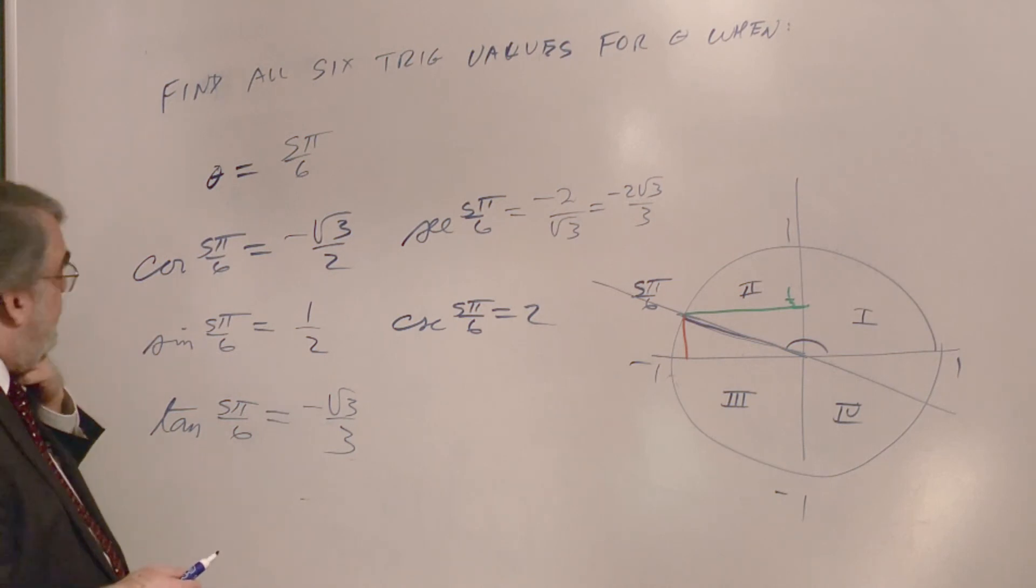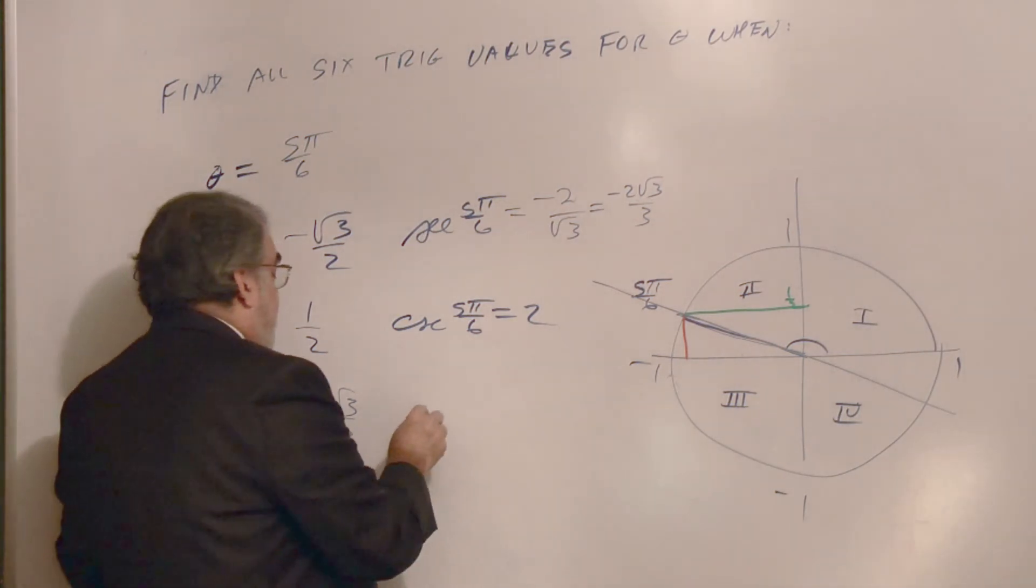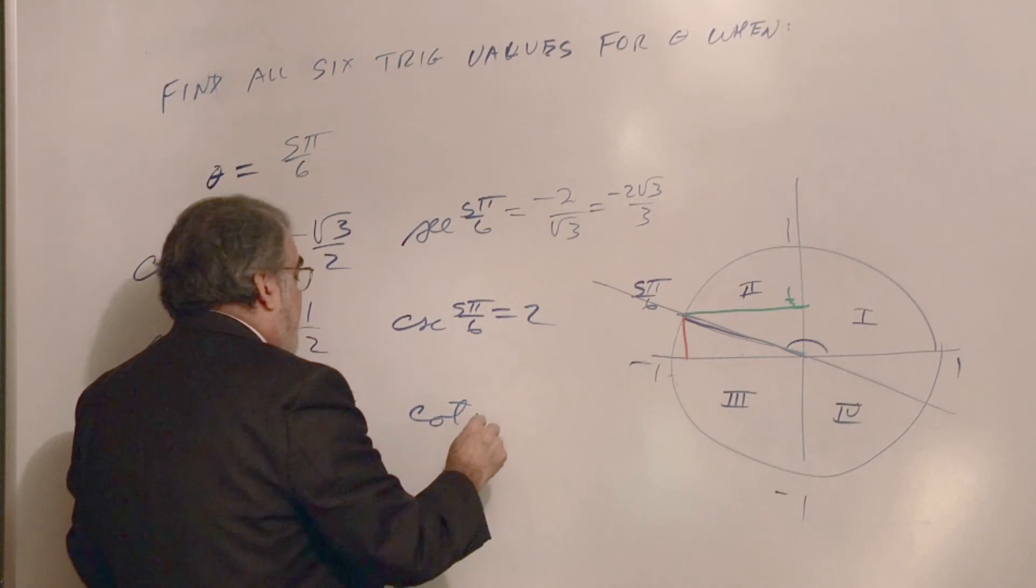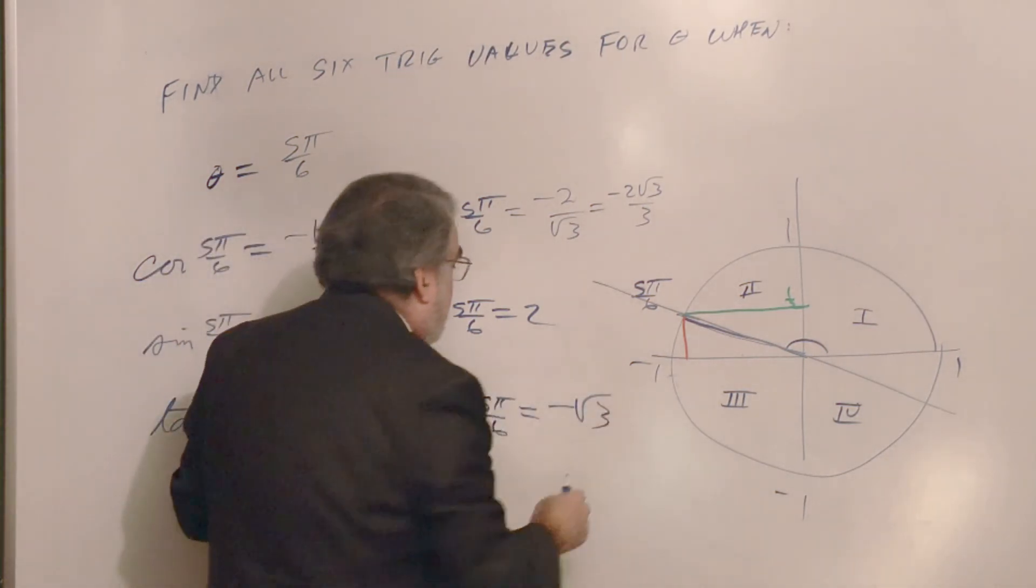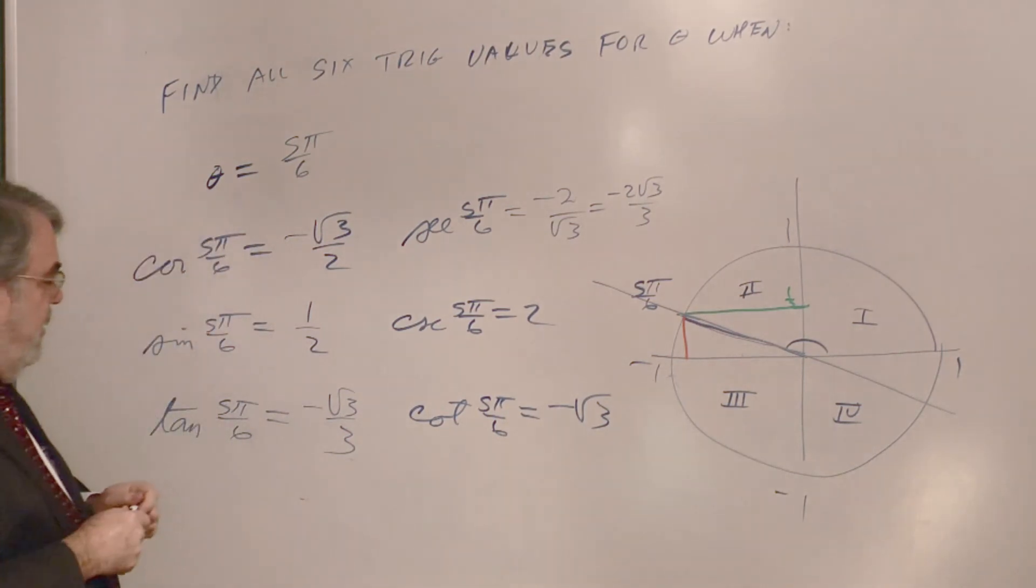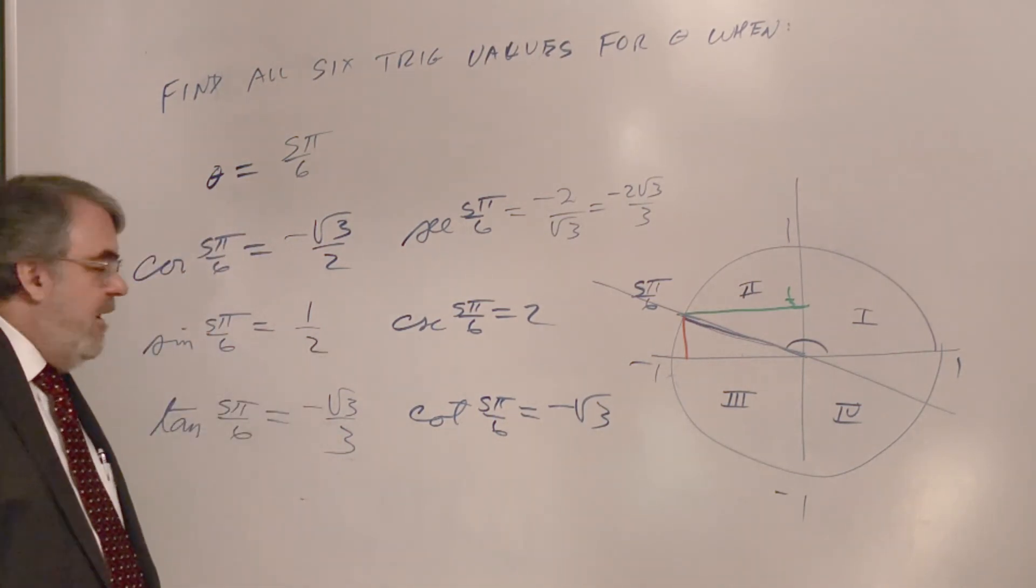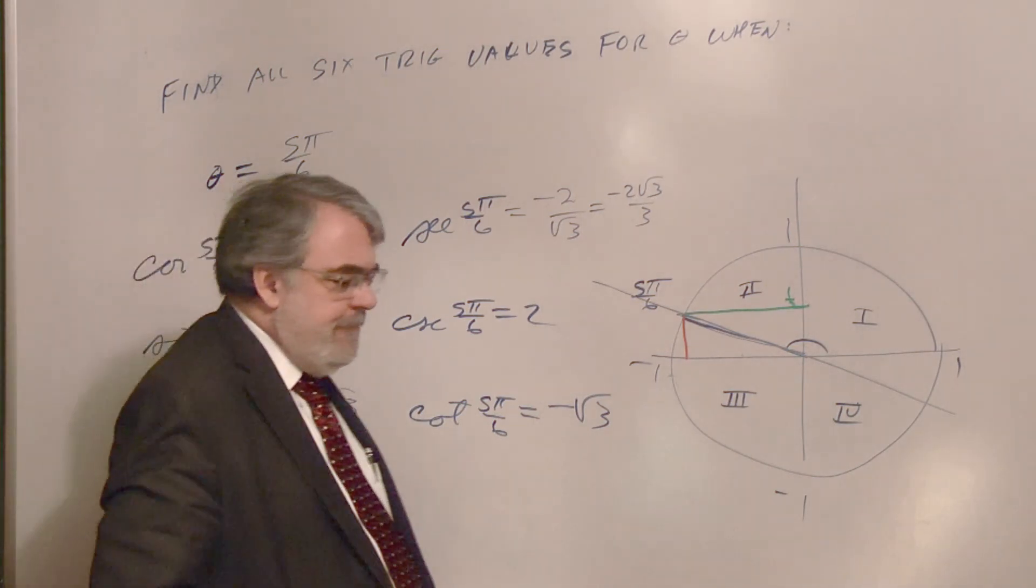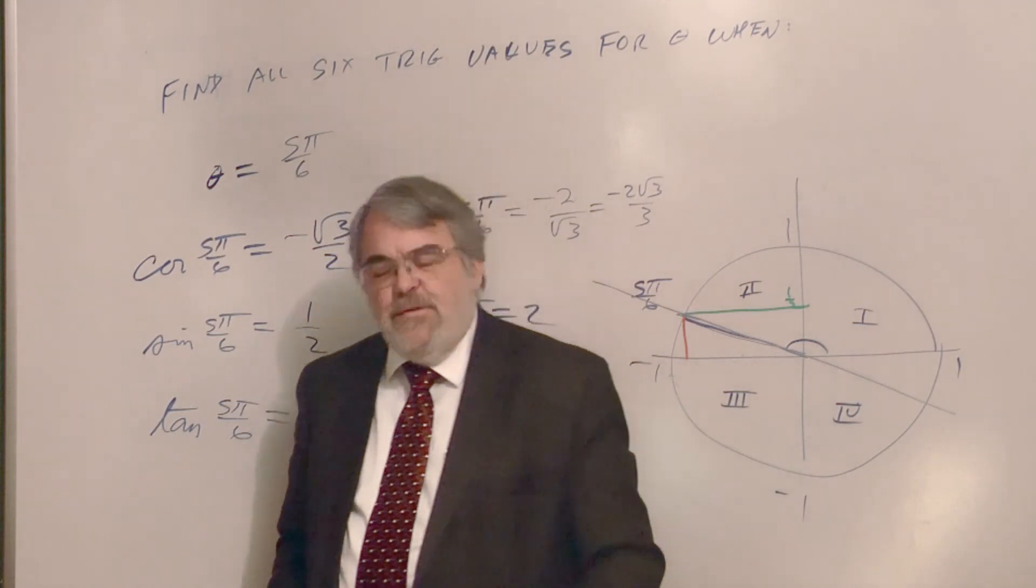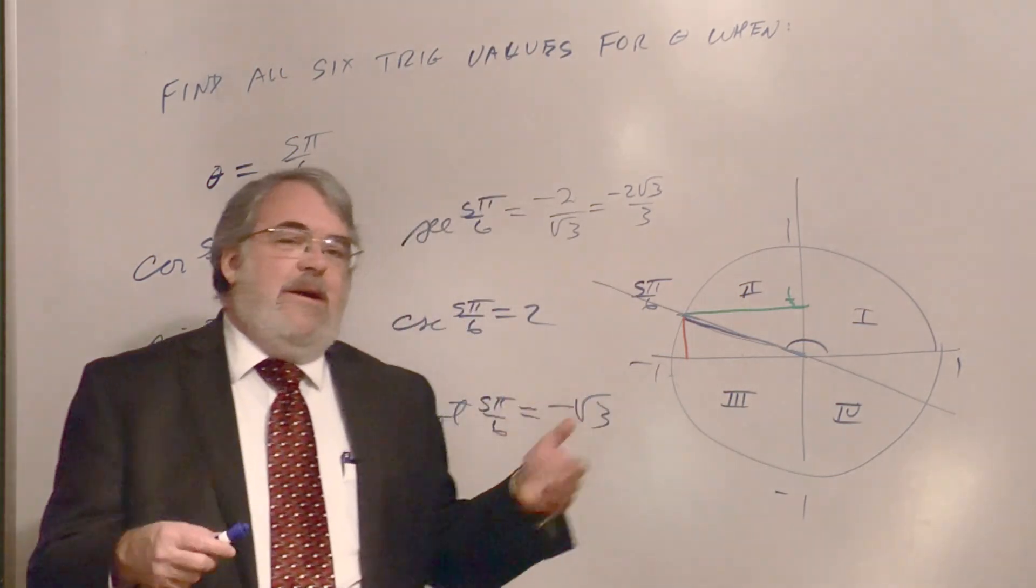And which means the cotangent, then, is the reciprocal, and that would be minus the square root of 3. Flip that, rationalize the denominator, and you've got negative square root of 3. Alright. So there we go. Let's go on to a new video where I'll expand some of these ideas.